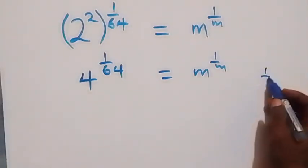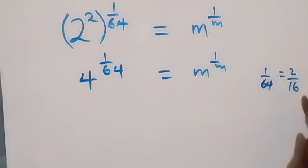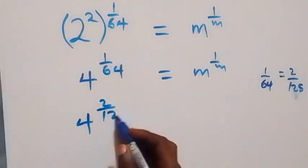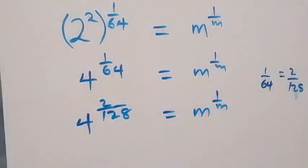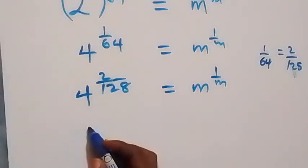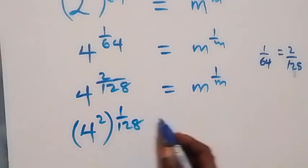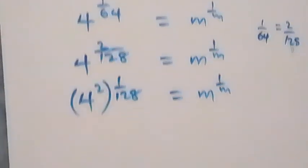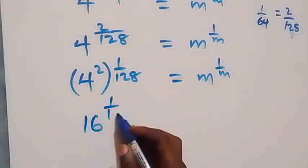Here, 1 over 64 can be written again as the equivalent fraction 2 over 128. This becomes 4 raised to power 2 over 128 equals to m raised to power 1 over m. We can separate this as 4 squared, raised to power 1 over 128. Now 4 squared is 4 times 4, which is 16. So we have 16 raised to power 1 over 128 equals to m raised to power 1 over m.